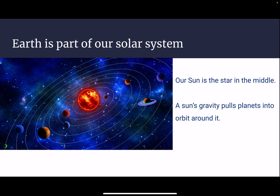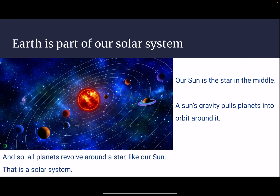Earth is part of our solar system. Our sun is in the middle of the solar system. A sun's gravity pulls planets into orbit around it. All planets revolve around a star like our sun. That's what a solar system is.